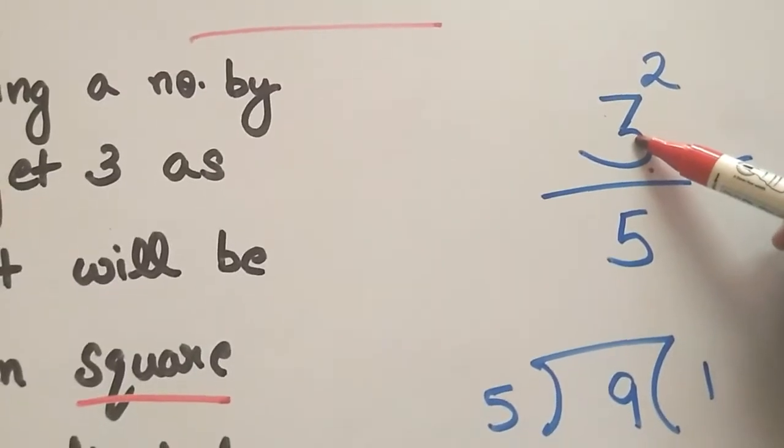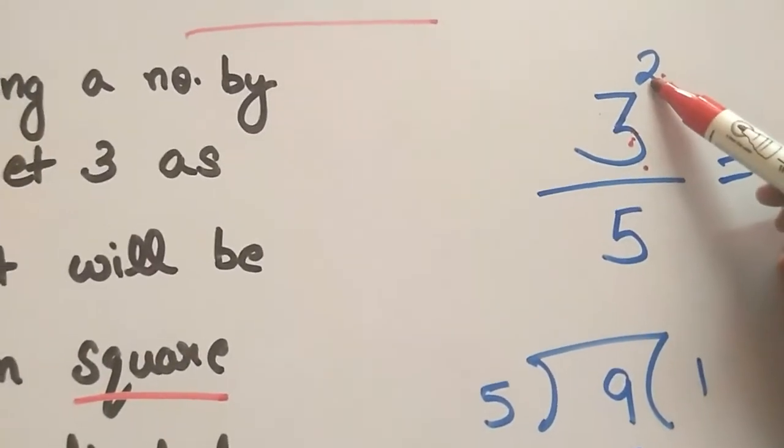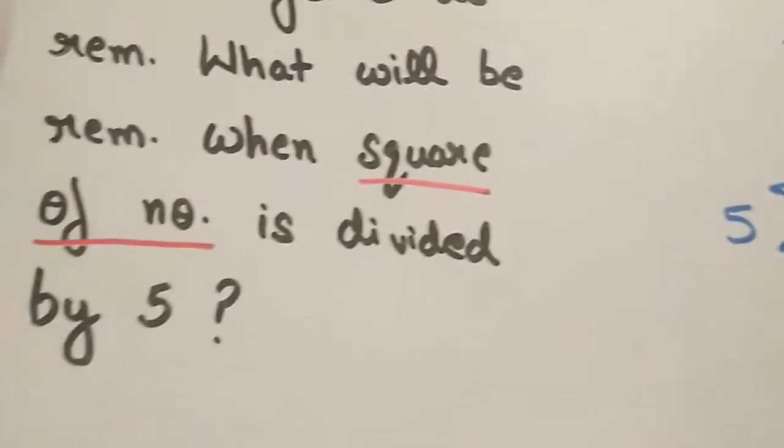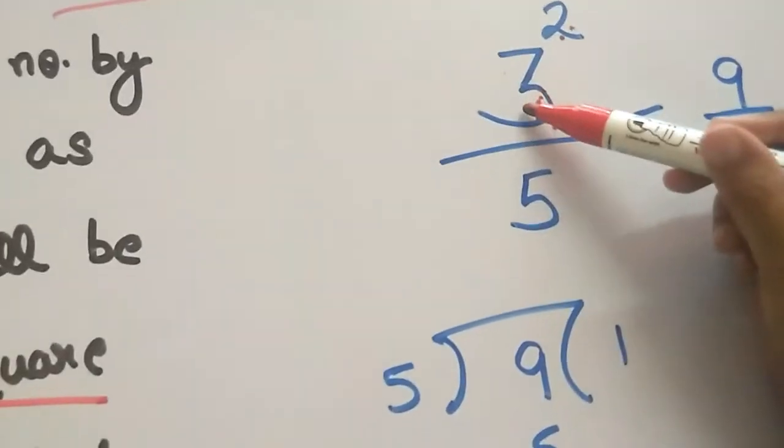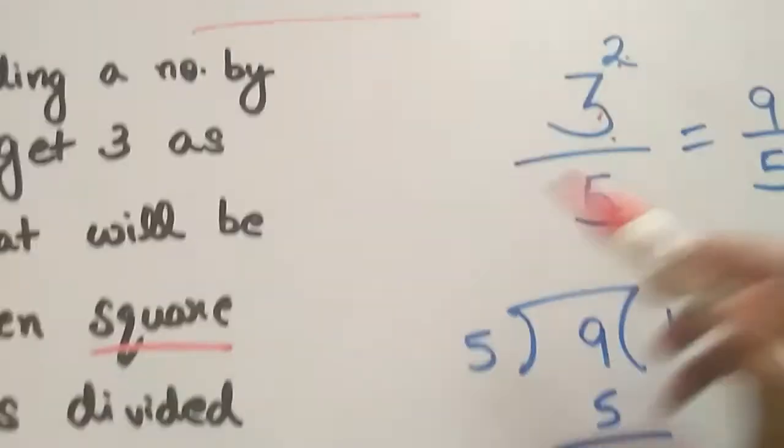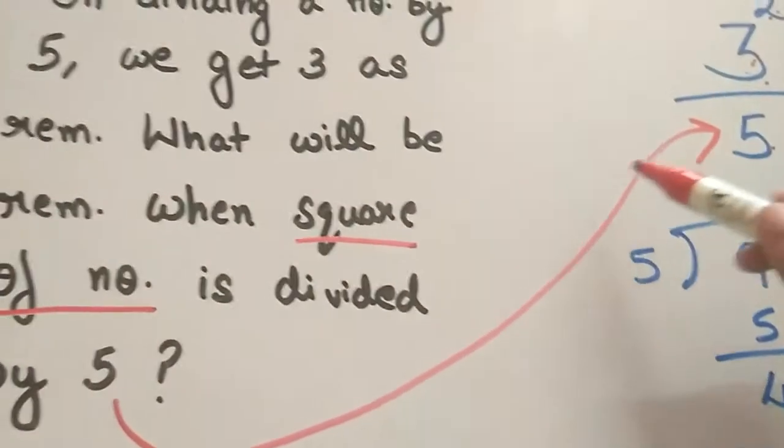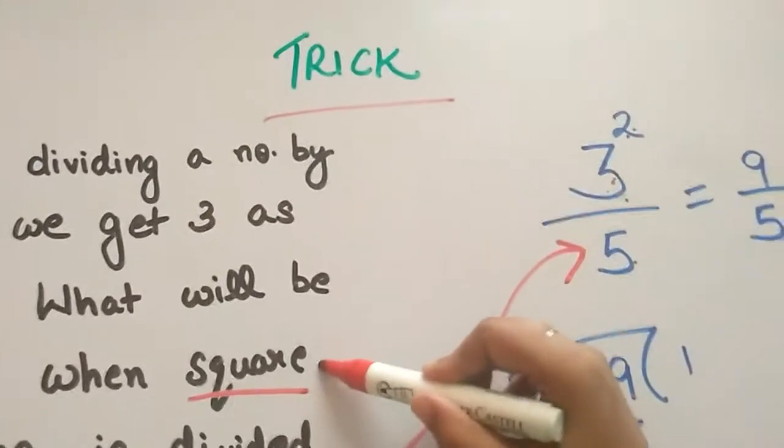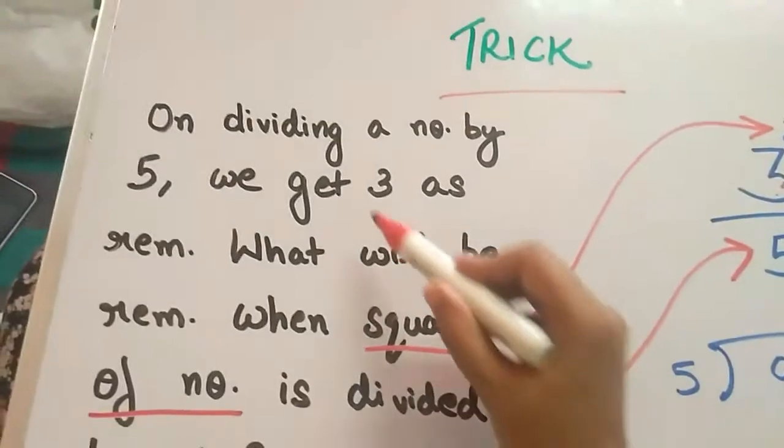So 3 square, when it is divided by 5, what will be the remainder? Just divide 3 square by 5. This square is on the remainder which was given to us.